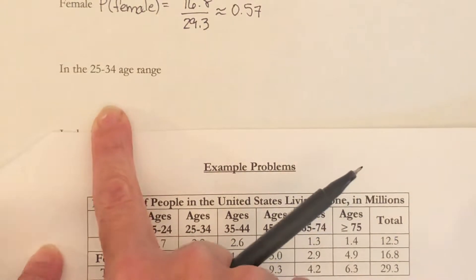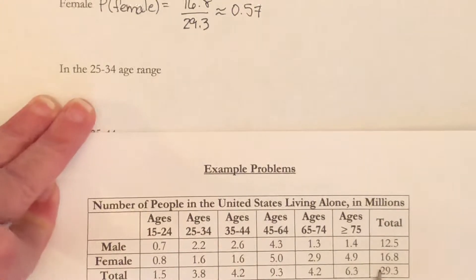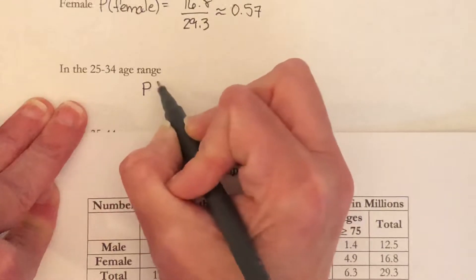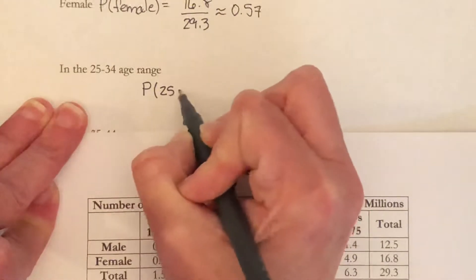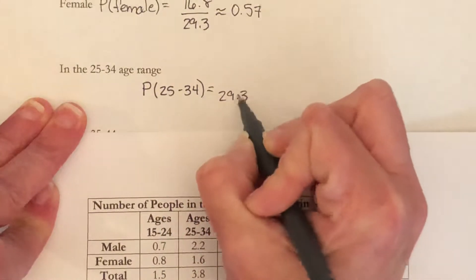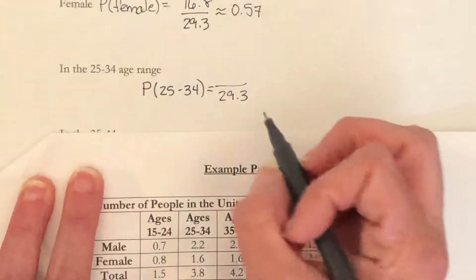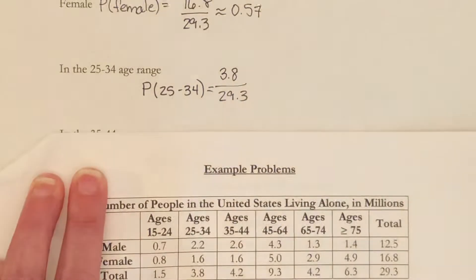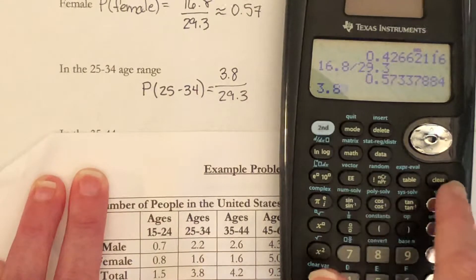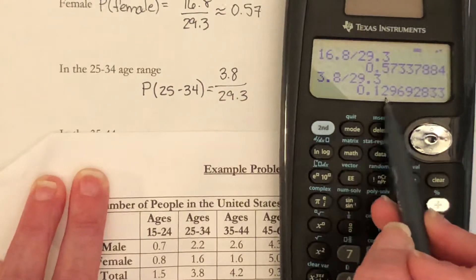We are asked to find the probability that a person is in the 25 to 34 age range. There are still 29.3 possibilities, and the total number of people in this age range, the males and the females, add to 3.8. This probability is approximately 0.13.